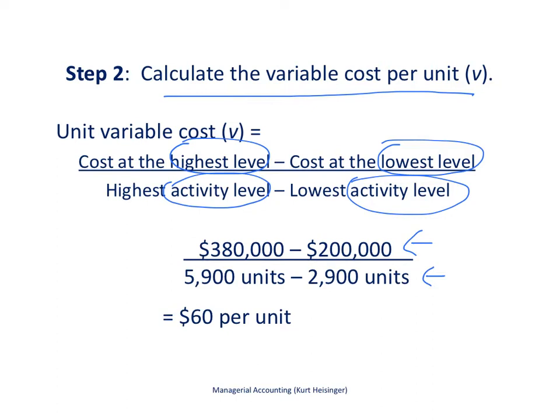That results in the cost per unit, V, of $60 per unit. And for those math aficionados out there, what we are calculating here essentially is the slope. We have two data points, and we are using those two data points to draw a straight line if we were looking at a graph, and from that calculating the slope.